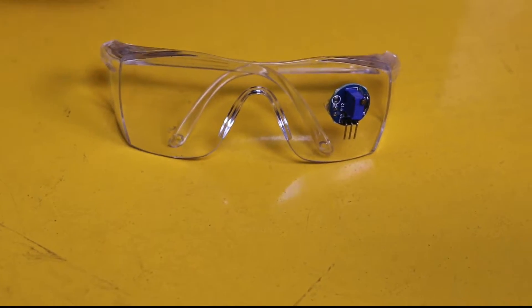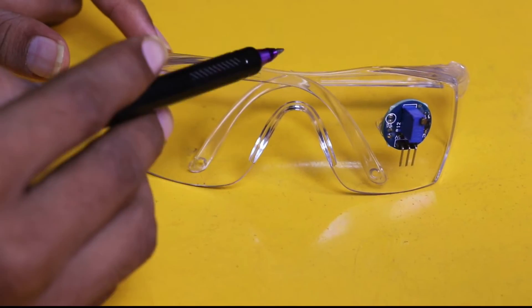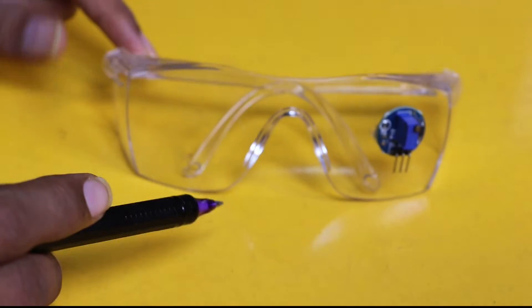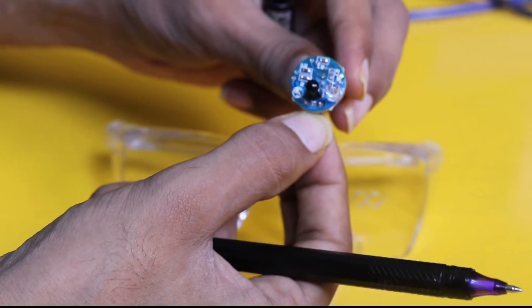Guys, this is the eye blink sensor we have bought online. These transparent goggles will come along with the eye blink sensor, which is this blue color sensor. It has three pins and two LEDs.